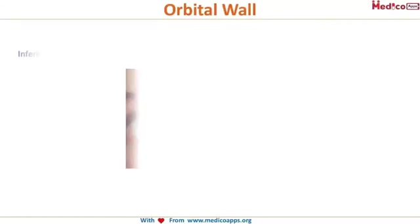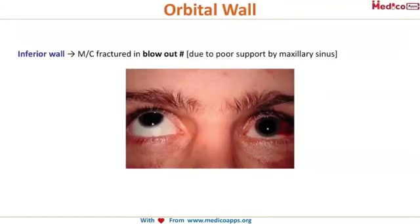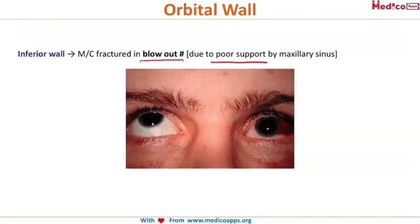These are things you will be frequently asked in exams. The inferior wall is the most common wall to be fractured in a blowout fracture. When someone is hit with a fist on the eye, that causes a blowout fracture, and the most commonly involved wall is the inferior wall. This is because there is poor support due to the empty air-filled maxillary sinus, which doesn't provide much support to the inferior wall, making it more predisposed to fractures.